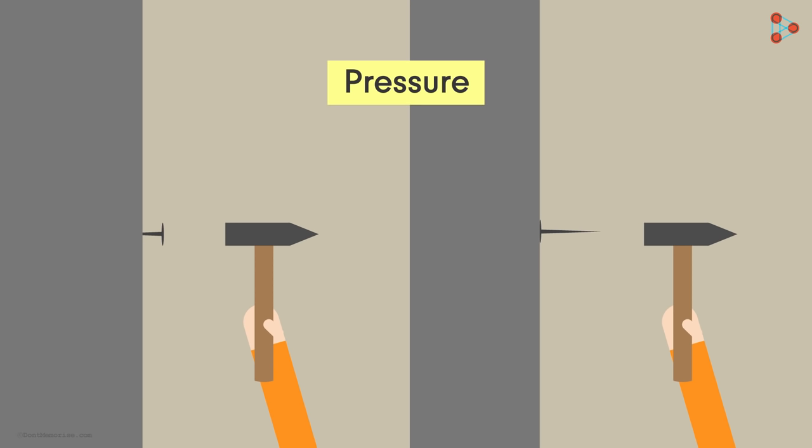The reason is that the pressure applied by the tip of the nail on the wall is more than the pressure applied by the nail's flat surface. But the question is why? First notice that the area of the tip of the nail is very less as compared to the area of its flat surface.